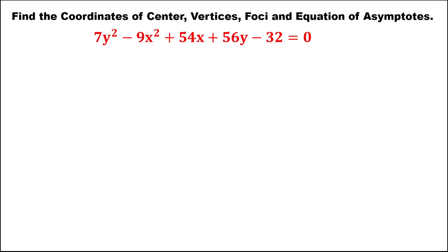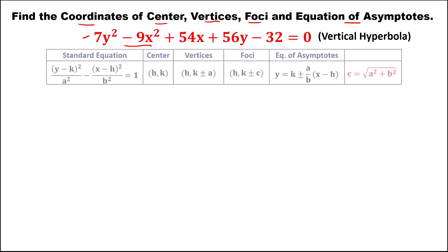For this problem, we need to find the coordinates of the center, vertices, foci, and the equation of asymptotes from this given. Since this given has a negative x squared, this is a vertical hyperbola. These are the formulas to find the center, vertices, foci, and equation of asymptotes for a vertical hyperbola.